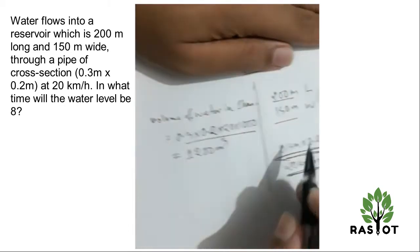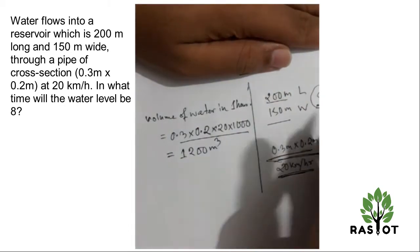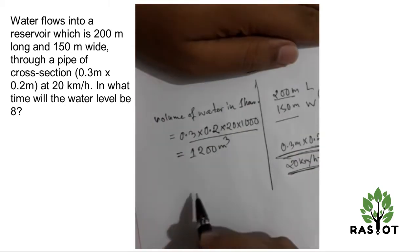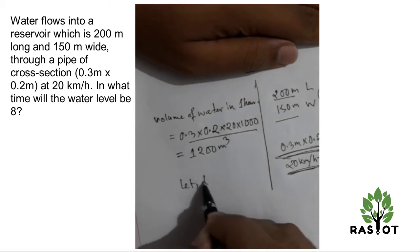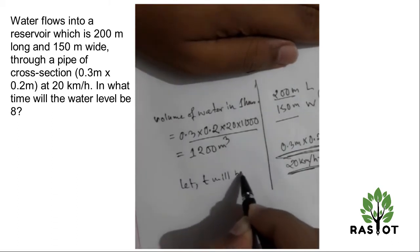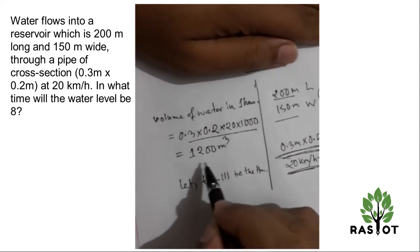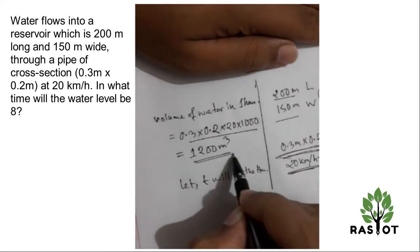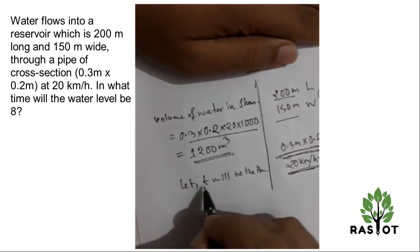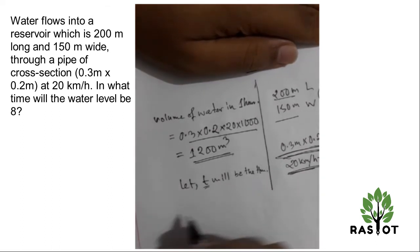Now, to fill the level of 8 meters, we need to find the time. If 1200 cubic meters flows per hour, then in T hours this volume will flow, and this volume needs to equal the reservoir volume.